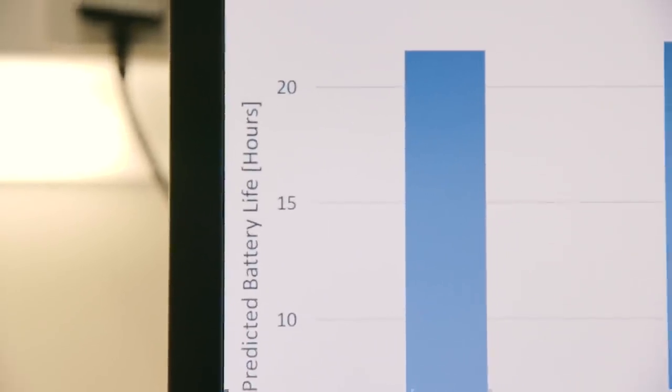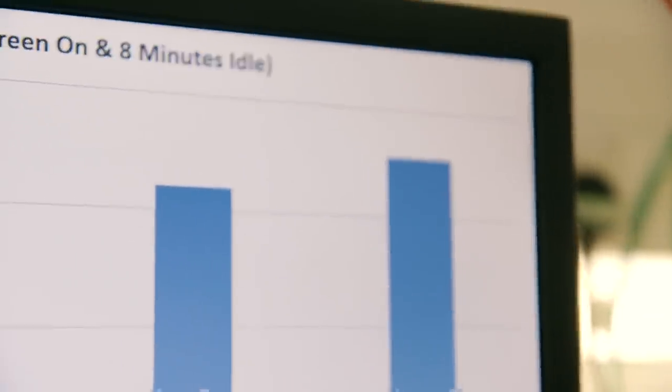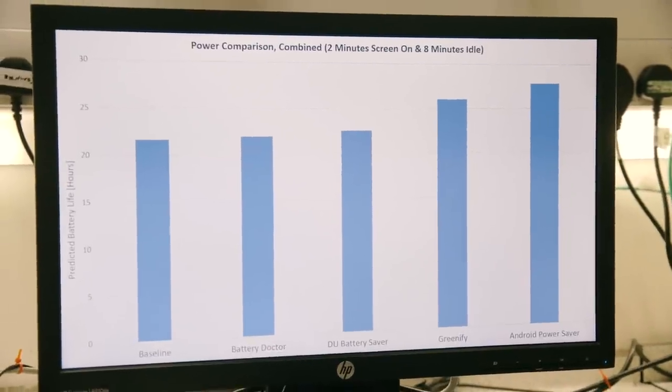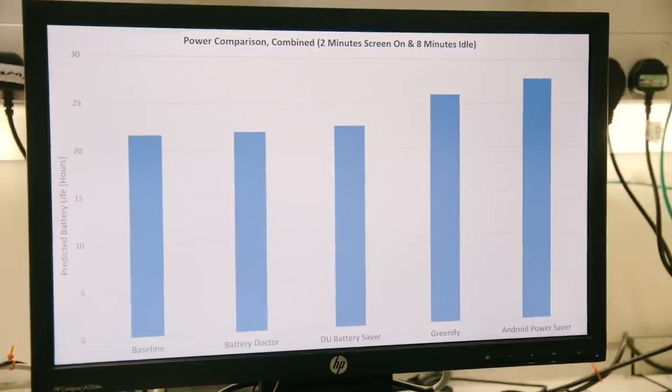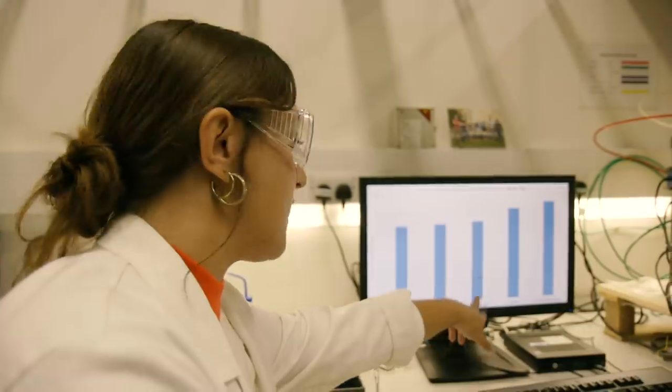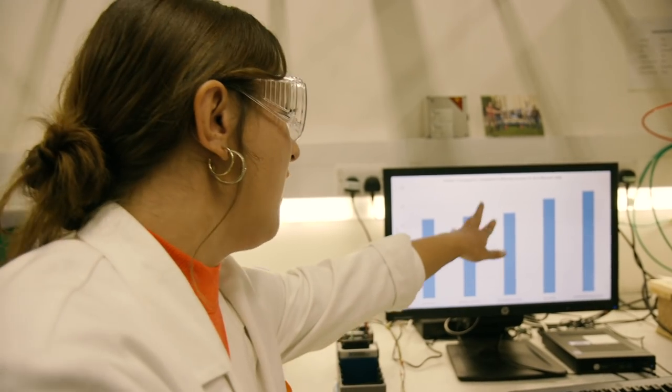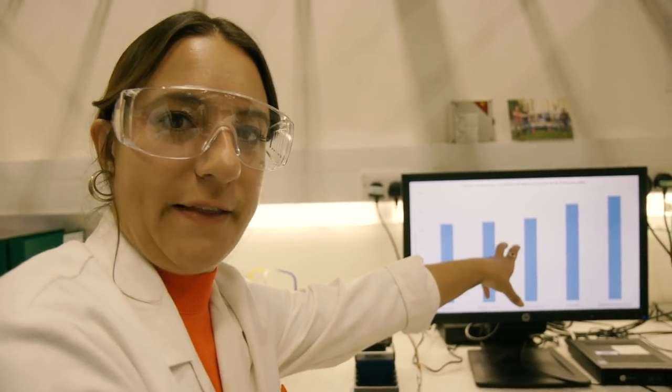Then they tested the phone baseline with no battery saver app installed and using a small amount of apps over a 10-minute period. And then they did the same with the battery savers installed, as well as the inbuilt Android Power Saver. So what we can actually see is that the power savers do seem to work. They make a small difference for Battery Doctor and DU Battery Saver, about two or three hours by the looks of things. And then Greenify actually makes a difference of about four hours.